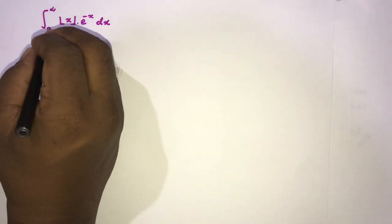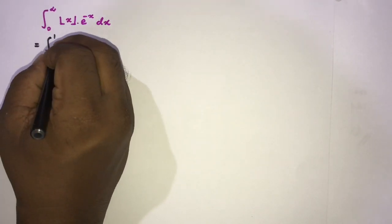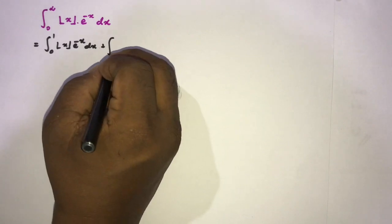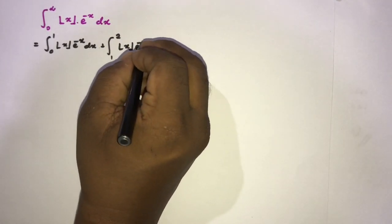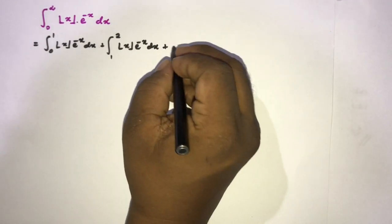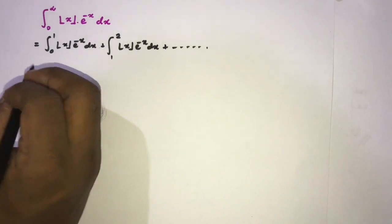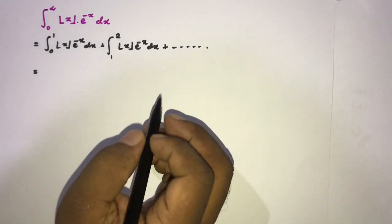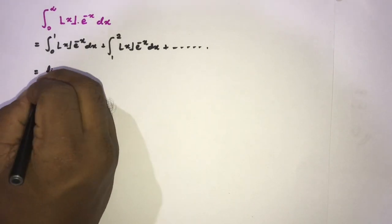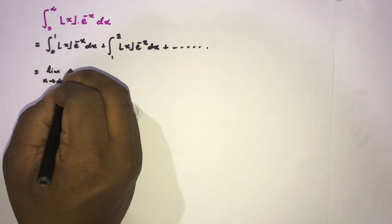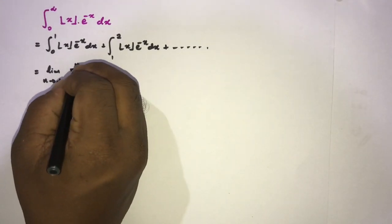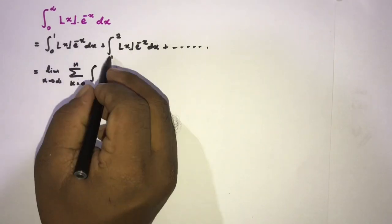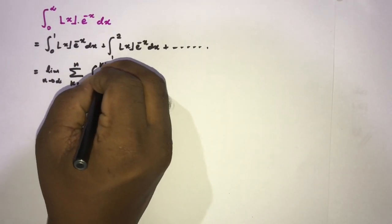First, we can write this as the integral from 0 to 1 of floor(x) times e to the minus x dx, plus the integral from 1 to 2, plus and so on. We use sigma notation to express this series: the limit as n approaches infinity of the sum from k equals 0 to n. On each interval, we go from k to k plus 1.